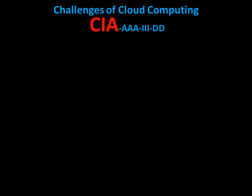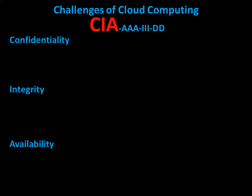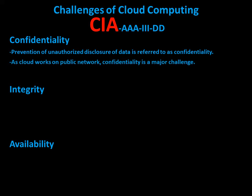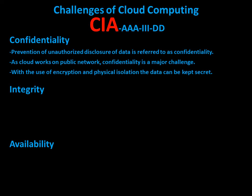Let us discuss CIA — Confidentiality, Integrity, and Availability. Prevention of unauthorized disclosure of data is referred to as Confidentiality. Confidentiality is a major challenge because cloud works on a public network. This challenge can be rectified with the use of encryption and physical isolation to keep the data secure.